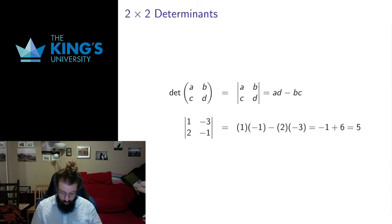we often write a matrix with straight lines to indicate determinant. So I could write it as the determinant of det as an operation, or I can write it in these straight lines. So if you see these straight lines, you can assume we're calculating a determinant,